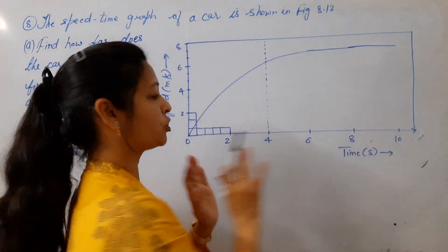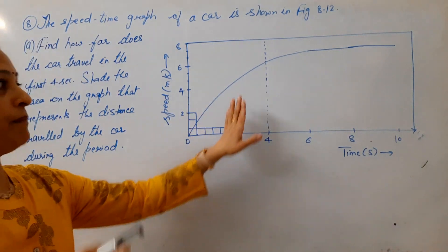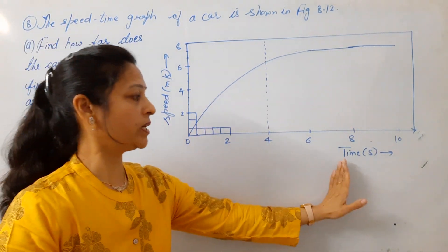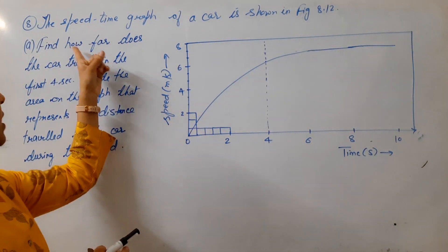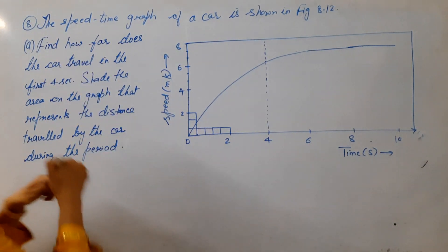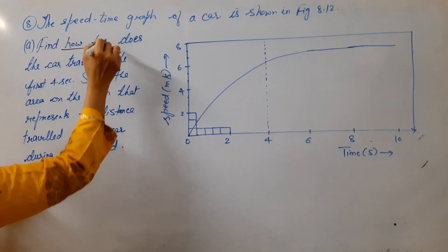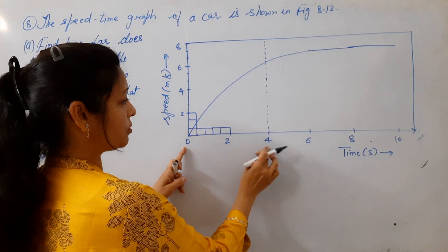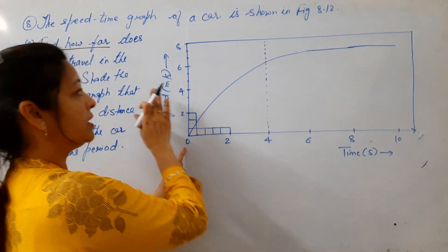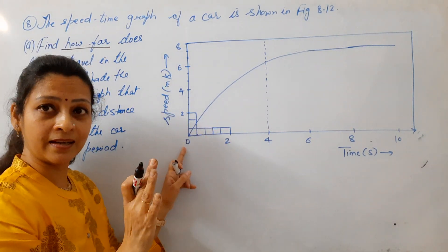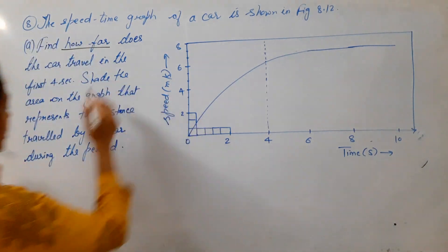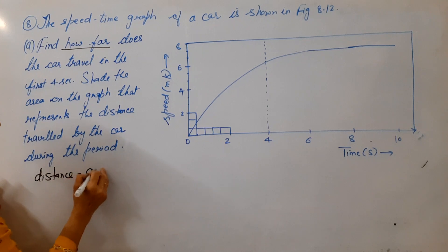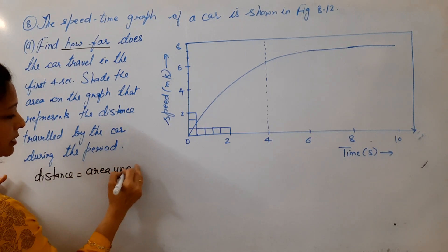For the graph, you can see the textbook properly. I have made a graph roughly to explain. You have time on the x-axis and speed on the y-axis. How far — meaning how far distance travelled in the first 4 seconds, from 0 to 4 seconds. On a speed-time graph, distance equals the area under the graph. So distance will be the area under the graph.